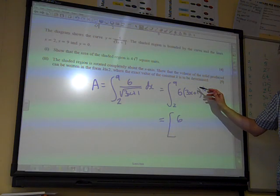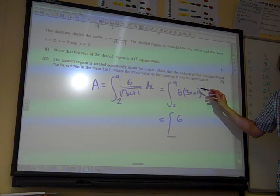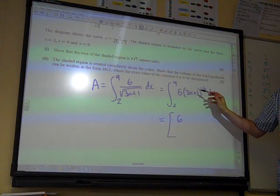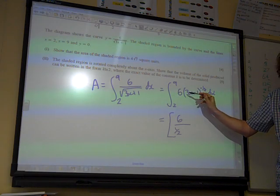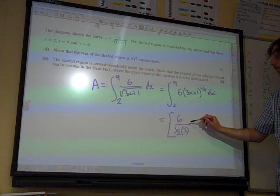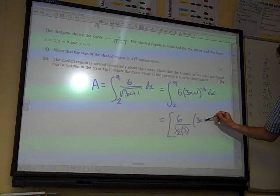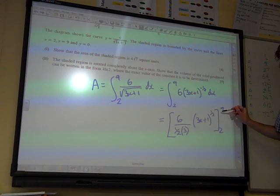We need to divide by, well, add 1 to the power and divide by the new power. So, that would be a half. We're also going to divide by the 3. That's the coefficient of x from in there. And that's 3x plus 1 to the half. Between 2 and 9.